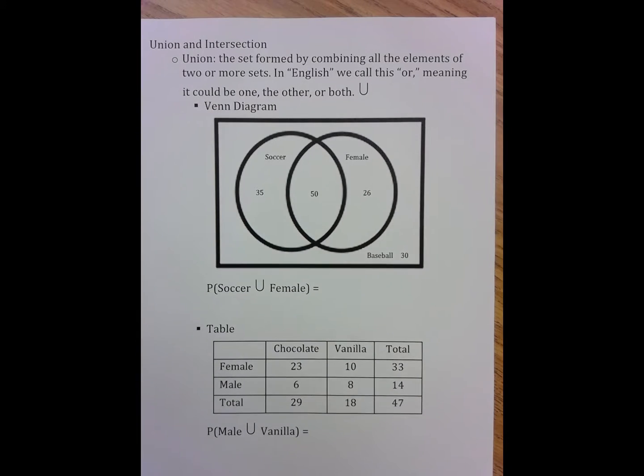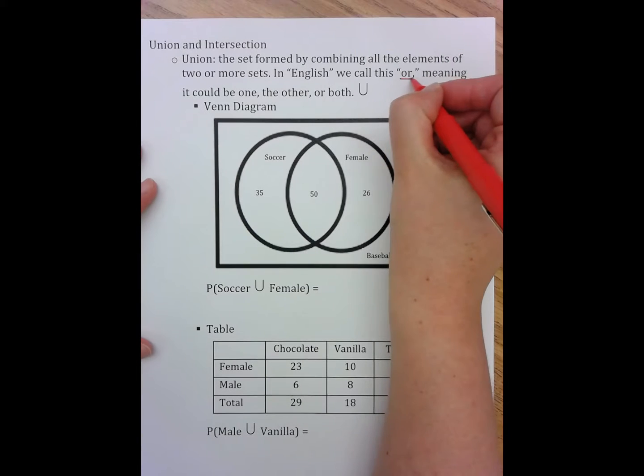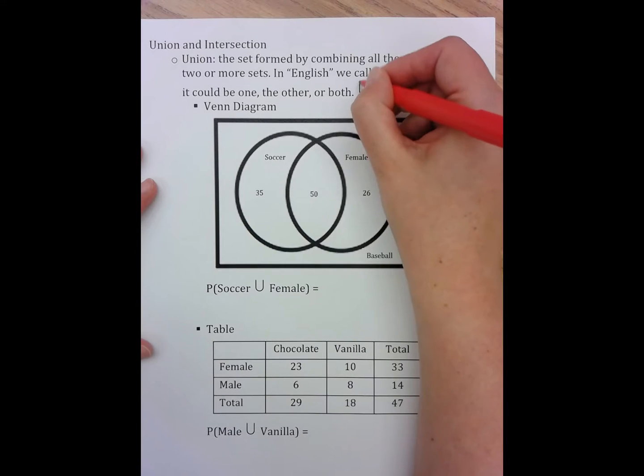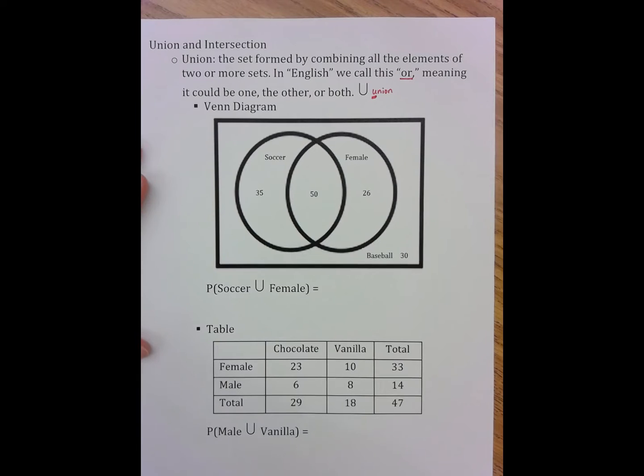These notes are on union and intersection. I have found in the past this to be a topic that is a little bit confusing because of the way we speak in English and then translate that into math. So in English, we call this the or and it's a right side up U without a tail. That's how I remember it's union because it's got the matching U's and union means or.